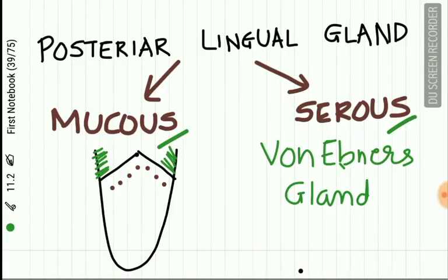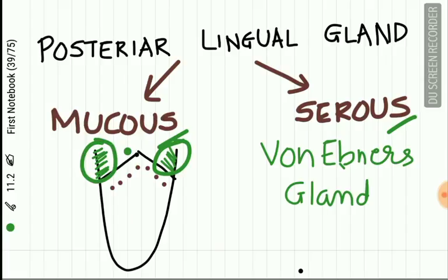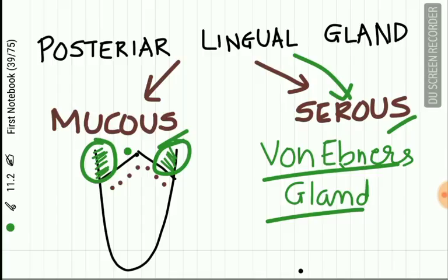The posterior lingual mucus glands are present posterior and lateral to the vallate papilla and open on the dorsum surface of the tongue.